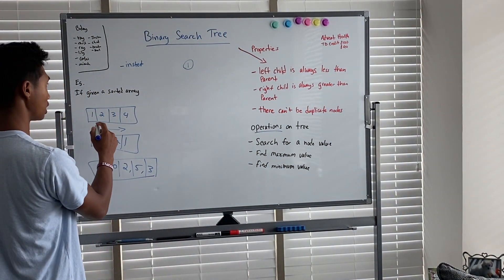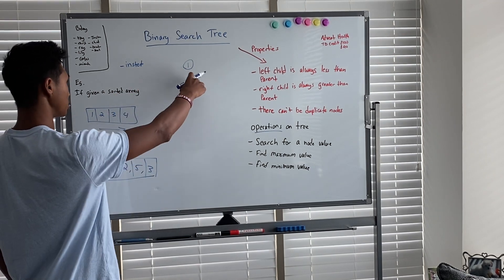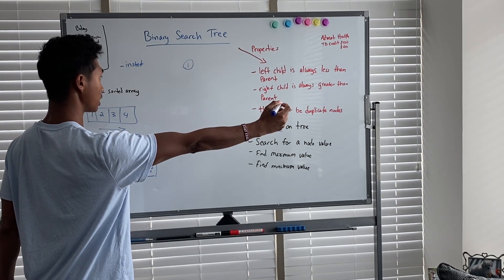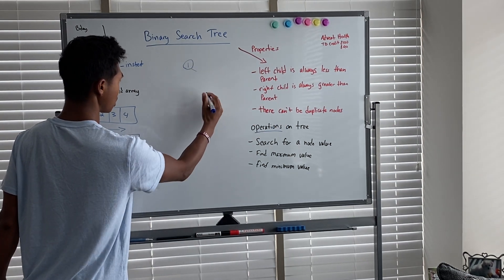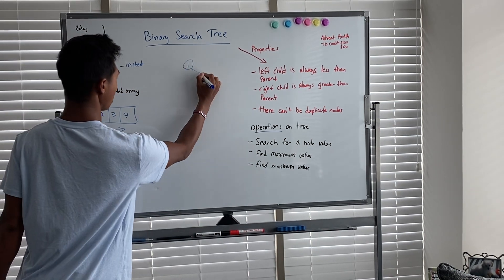So let's say two, we have to compare two with one. Is two greater than one? Yes. So it's going to go on the right-hand side. If it was less than one, if it was negative one, we would go on the left-hand side.